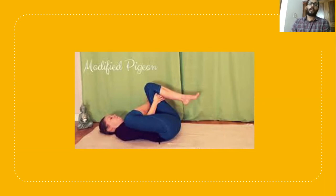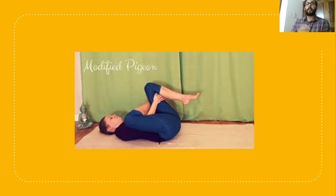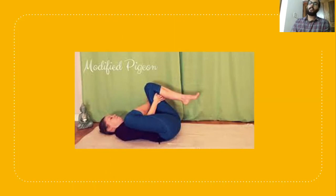Another exercise to incorporate is the gluteal set. Ask the patient to be in prone position, then tighten the buttocks and hold for 5 seconds, repeating 10 times. This exercise is also effective for piriformis syndrome.